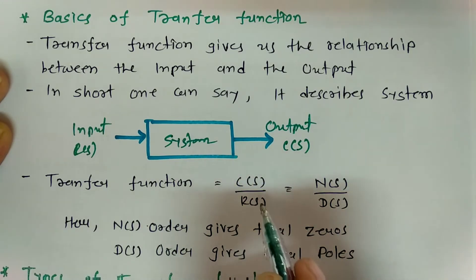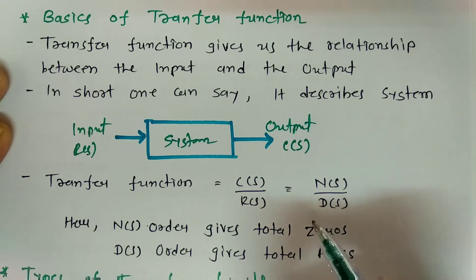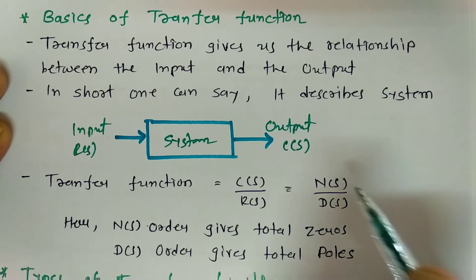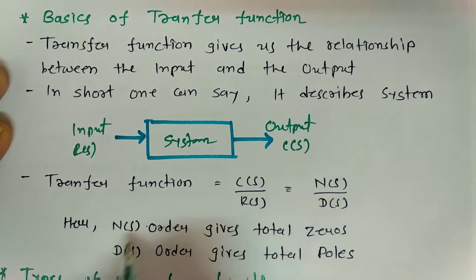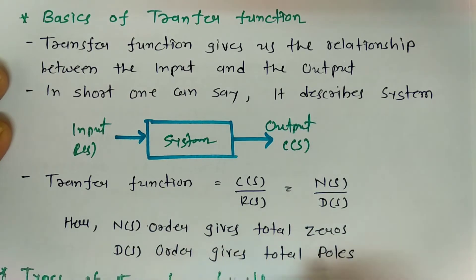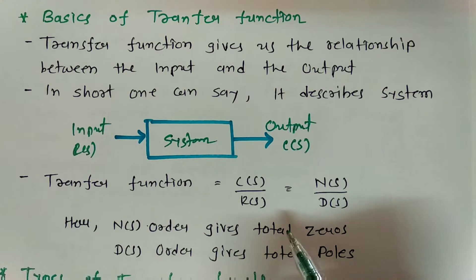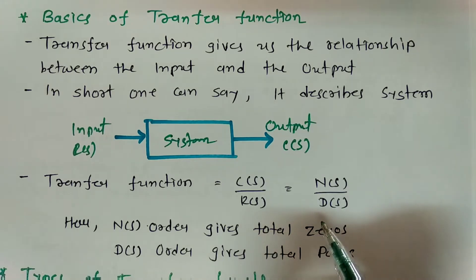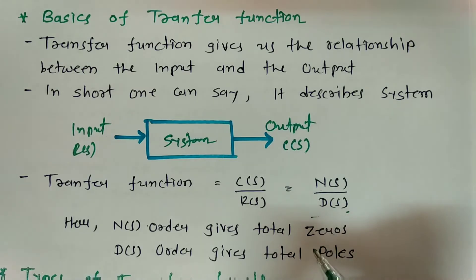In this ratio, the transfer function may have a numerator polynomial and a denominator polynomial. The numerator polynomial gives an idea about how many zeros are there, and the denominator polynomial gives an idea about how many poles are there. So transfer function gives the input-output relationship of a given system, where the numerator polynomial explains the number of zeros and the denominator polynomial explains the number of poles.